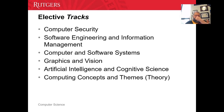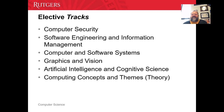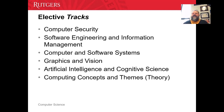If you explore the computer science website — and you should, it has a lot of good information — you're going to run into something called TRACs. We have six of them listed: computer security, graphics and vision, artificial intelligence, and others. A TRAC is not something you should think of as being official like a minor.